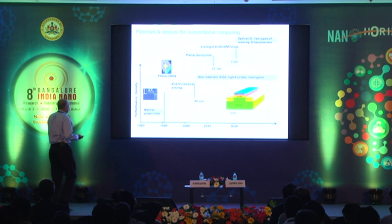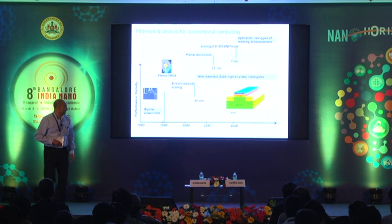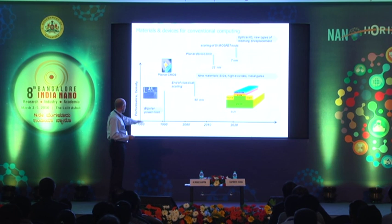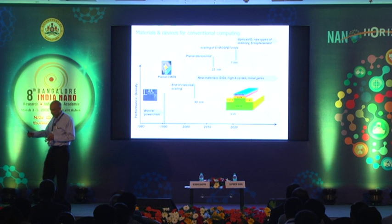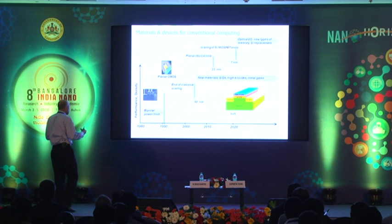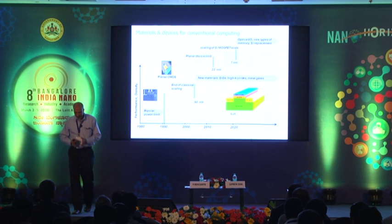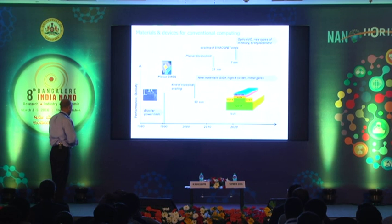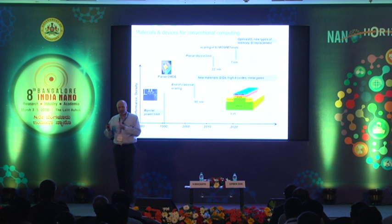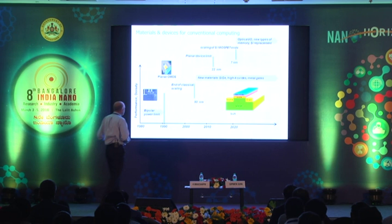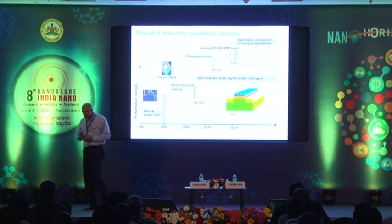Let me start with conventional computing and where that technology is going. The graph here charts the progress of silicon microelectronics. In the 1980s to about 1990, computing technology — silicon microelectronics — was bipolar transistor-based. Those circuits started consuming enormous power, and you ended up with a heat bottleneck where the amount of heat generated in those chips was getting exceedingly high. So in 1990, there was a switchover in the field from bipolar to CMOS technology.